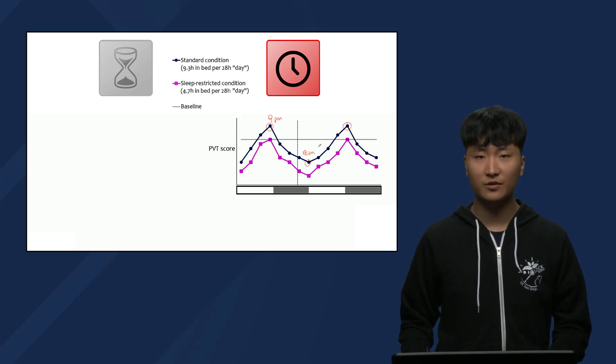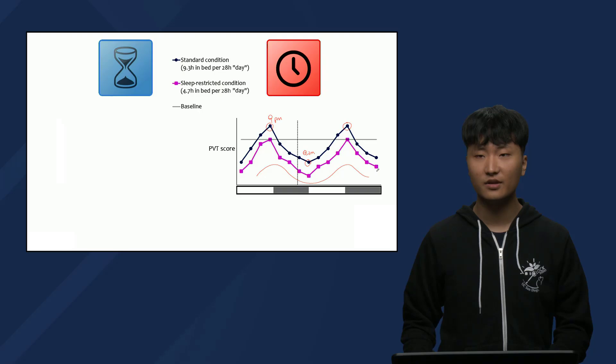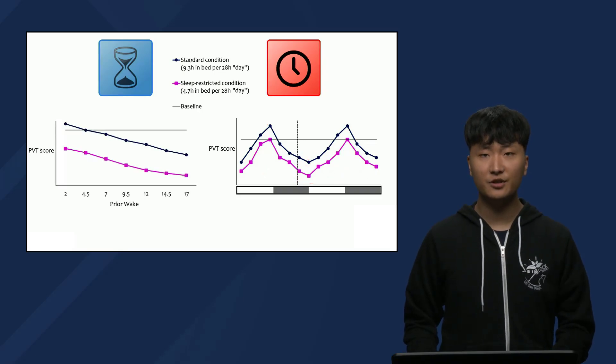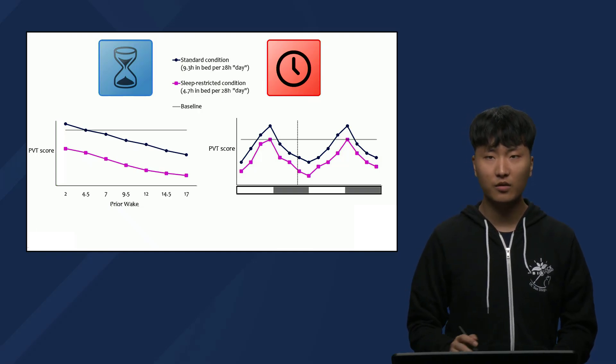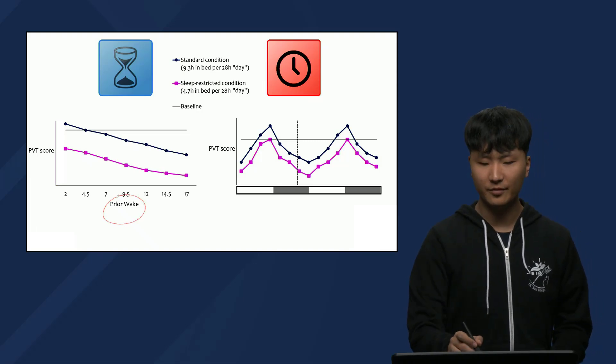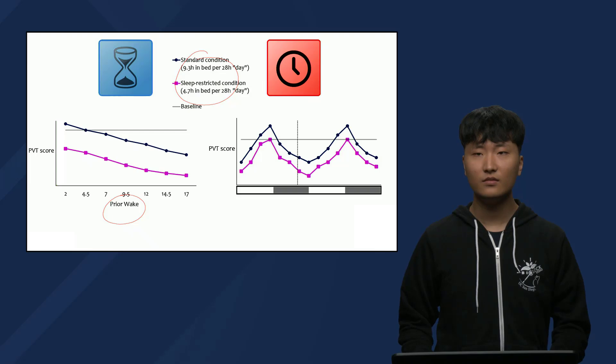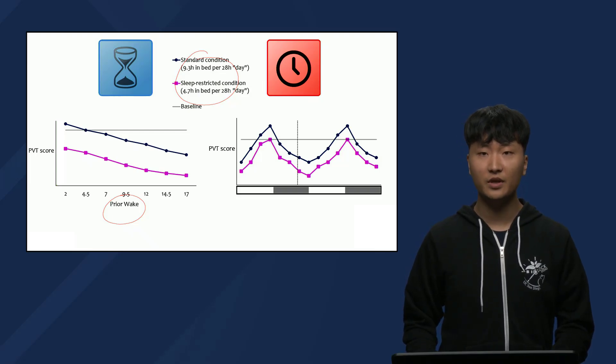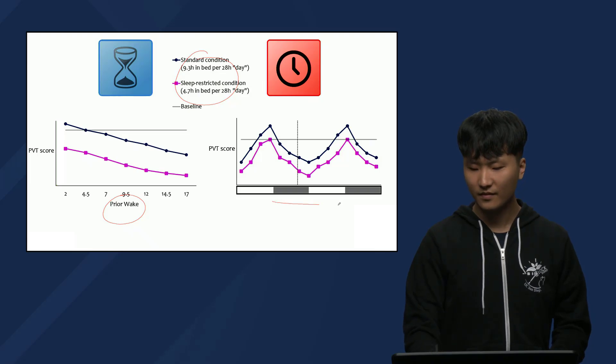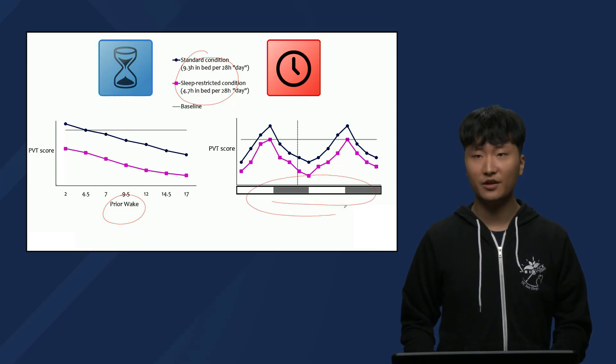Now, looking at the sleep-restricted condition in the lower purple line, we see that there is also a circadian fluctuation in performance. But in general, participants are even slower than the standard group because they got less sleep each day, and also generally slower than their baseline scores as well. So, the researchers were able to look at how performance in the PVT is affected by process S, by measuring both prior wake and amount of sleep, and they also determined how performance in the PVT is affected by process C, by measuring at different circadian times of day.